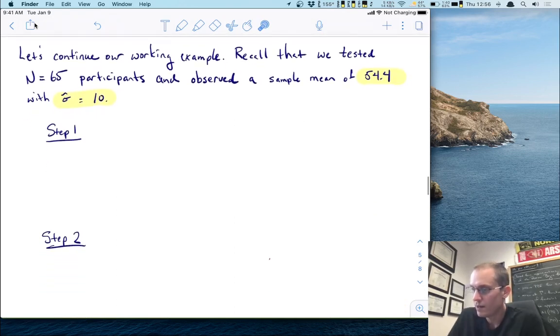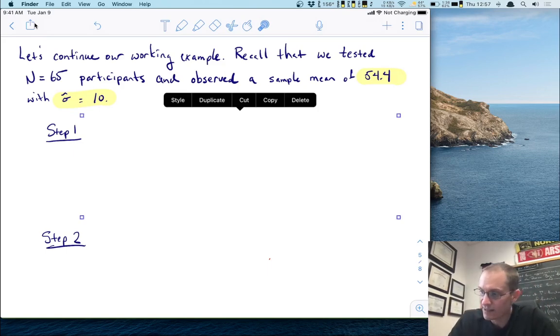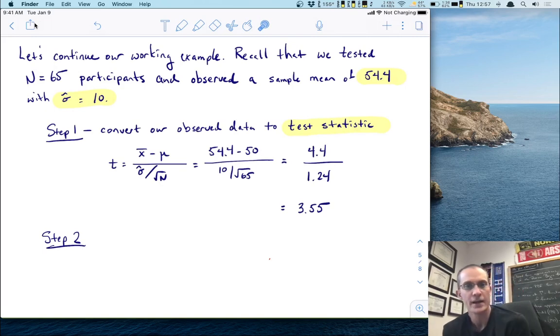So let's continue this example. So recall that we tested, let's say 65 participants. Again, I'm making this number up, but it's just to have something to work with. Let's say we tested 65 participants and we observed a sample mean of 54.4 and a standard deviation sigma hat of 10. So step one is we need to convert these observed data into some test statistic. Now at this point in the semester, we've been talking about t tests. So that makes sense for us to do that here. We're going to convert our observed data to a t score, which we do using the formula that you're familiar with, x bar minus mu over sigma hat over root n. We'll put in the relative numbers. We'll do the relative arithmetic and we get a t score of 3.55. So pretty big t score.